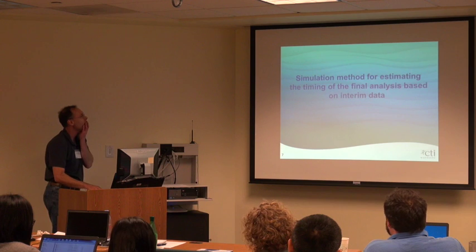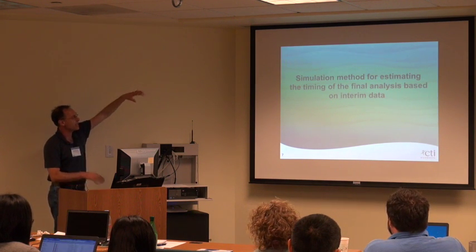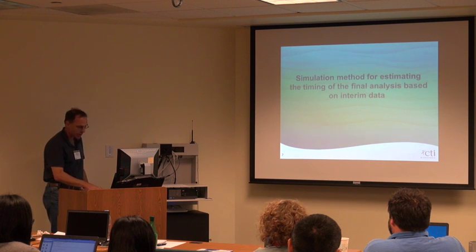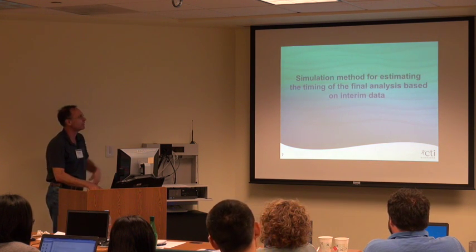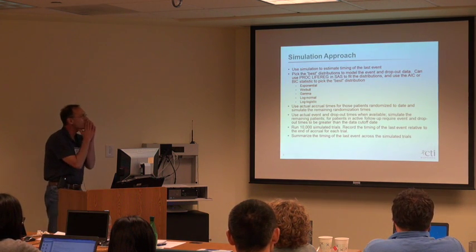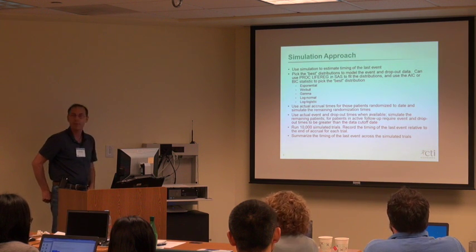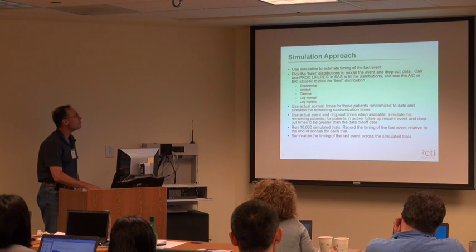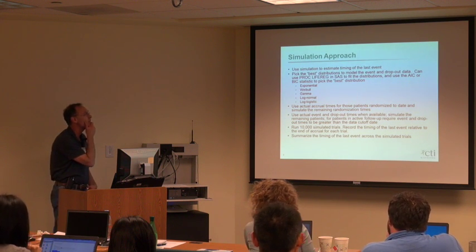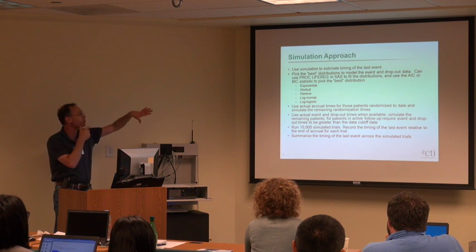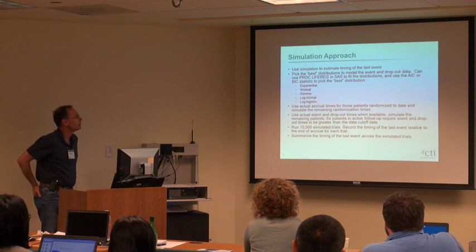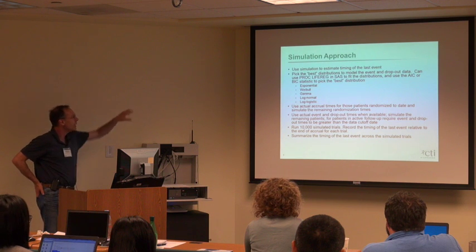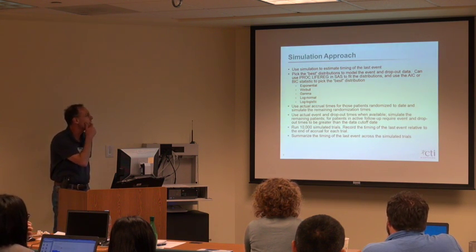Now with some interim data available, I want to estimate when that 161st event will occur. The approach I've been implementing is to pick the best-fitting distributions to model the event and dropout data. I use PROC LIFEREG in SAS to estimate what distribution fits best, and you can use the AIC or BIC statistic to pick the best distribution. LIFEREG offers several options including exponential, Weibull, generalized gamma, log-normal, and log-logistic distributions.